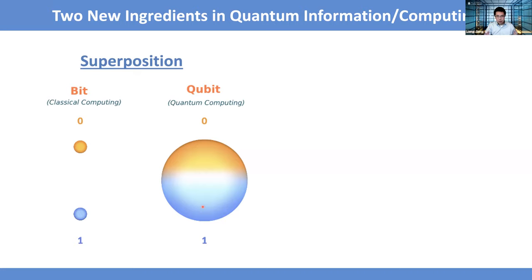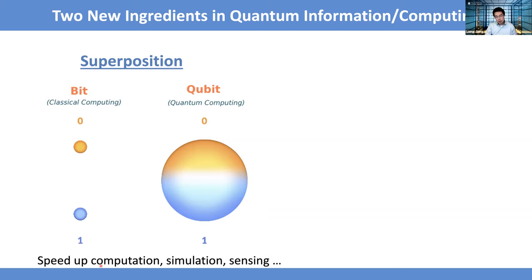If you have just a hundred classical bits, you only store a hundred bits of information. But if you have a hundred qubits, you can simultaneously track the superposition of the evolution of two-to-the-hundred possible states. Reading out that information is non-trivial — it's what makes developing efficient quantum algorithms challenging — but at least it mimics the quantum nature of simultaneous evolution of different superpositions.